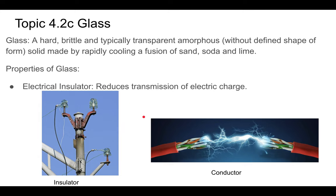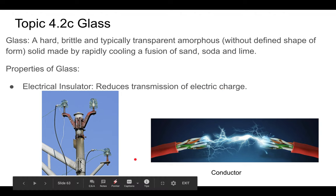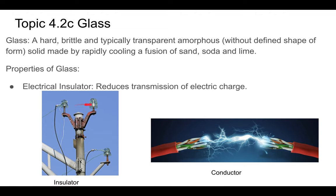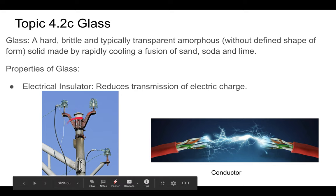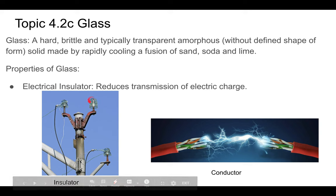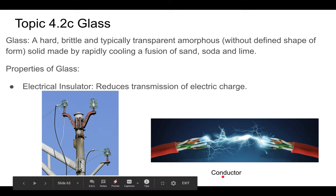Glass is a good electrical insulator — it reduces the transmission of electrical charge. It's used on high-voltage power lines, where glass insulators ensure electricity doesn't flow where it shouldn't. The opposite of an insulator is a conductor — copper inside the wires conducts the electricity while the glass insulates it.